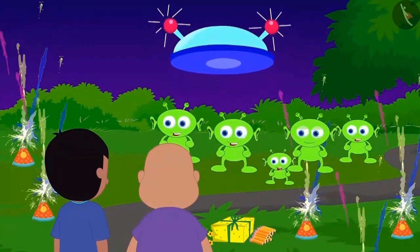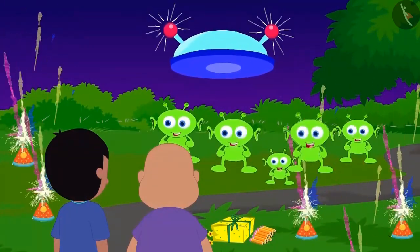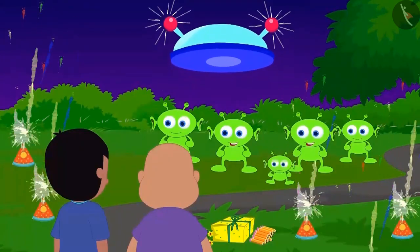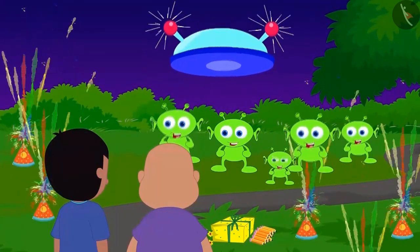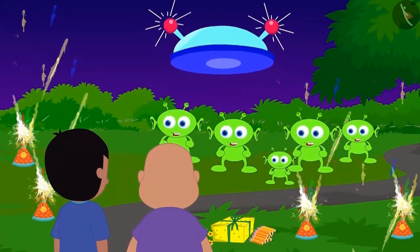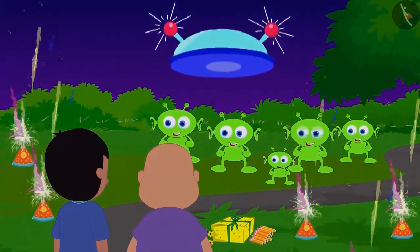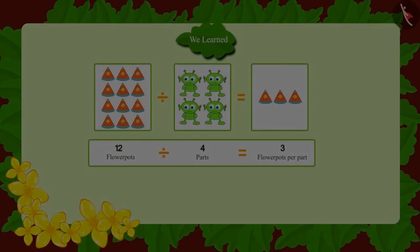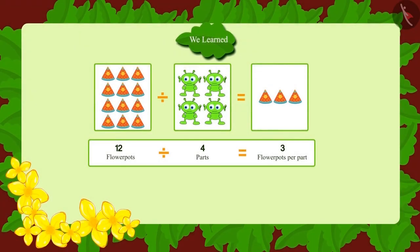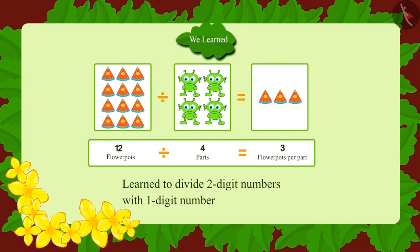At last, Jeev came in his flying saucer to Raju and Bablu to celebrate Diwali along with his friends. Look how happy he and his friends are seeing Raju and Bablu's preparation! Children, in this lesson we learned how to divide two-digit numbers with a one-digit number. In the next lesson, we will look at some interesting examples of this.